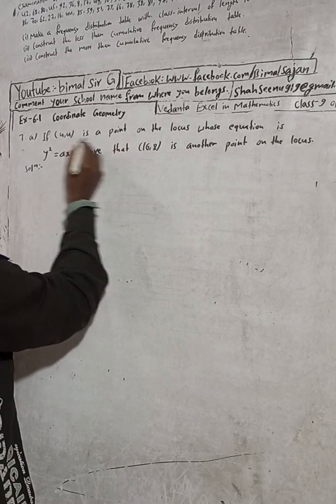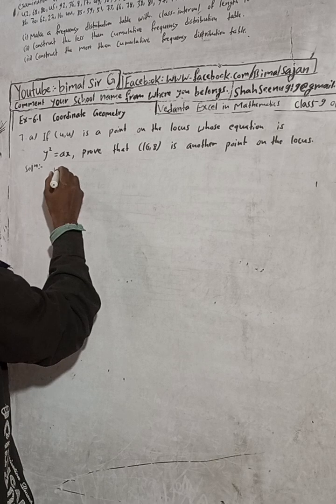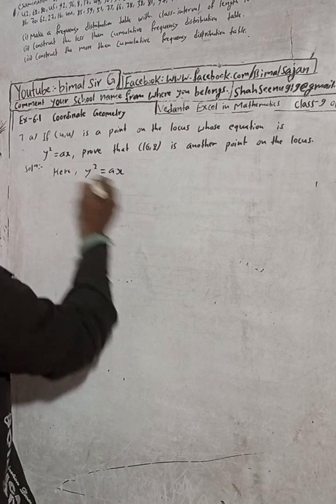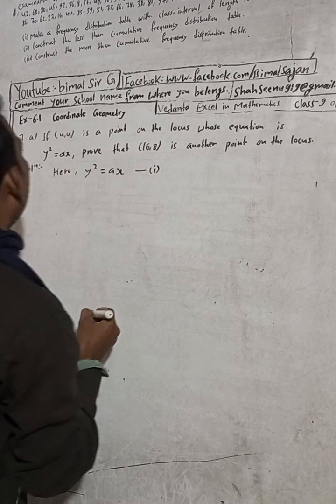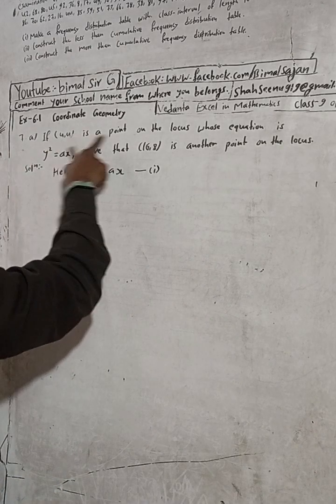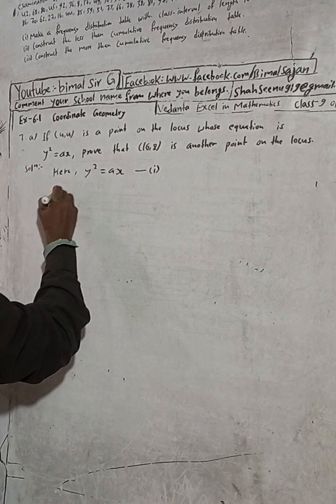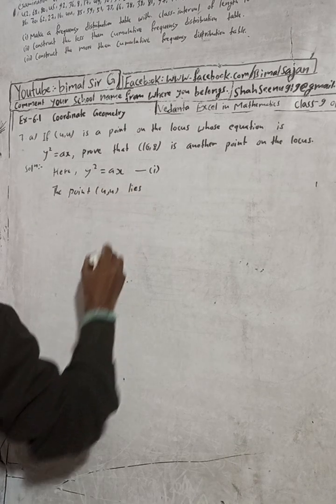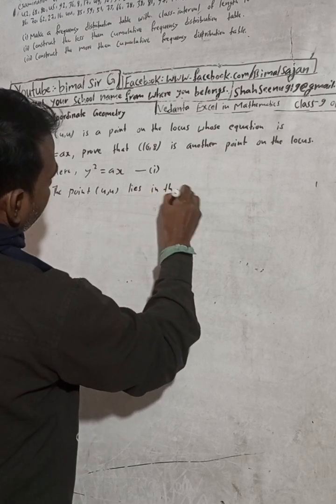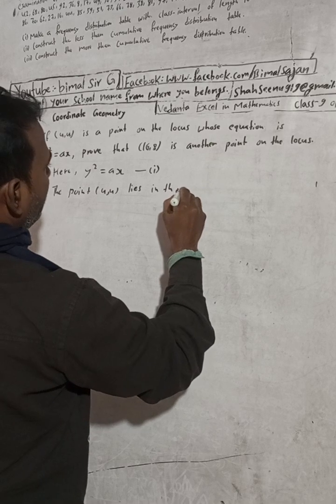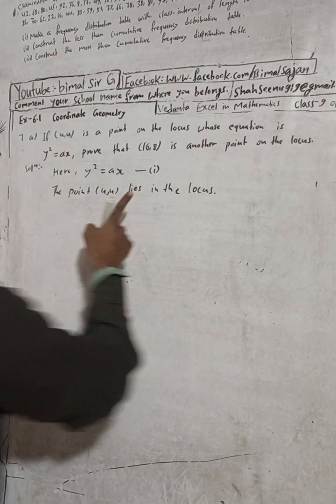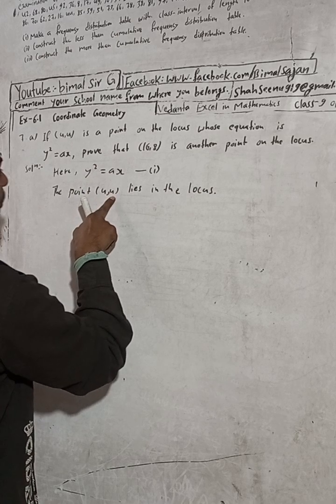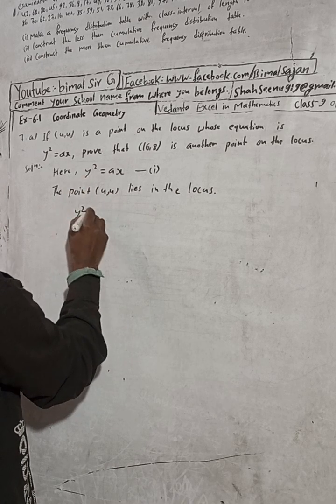The question tells us that (4,4) is a point on the locus. So first I write here: given equation y² = ax — this is equation 1. Since the point (4, 4) lies on the locus, we substitute: in place of x put 4, and in place of y put 4. So y² = ax becomes: in place of y we put 4, giving us 4² = a × 4.